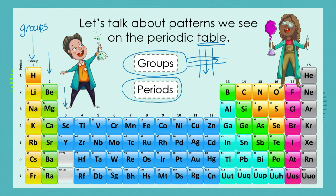As we go along the periodic table we find that we have 18 groups. The periods of course are the rows, and we look at how many rows we have — there are seven rows showing on this version of the periodic table. So we know that our elements are classified into this table.